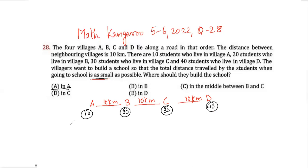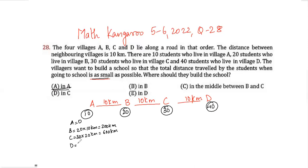Let's start with the options. Suppose the school is built in A. Students in village A travel zero kilometers. 20 students in village B travel 10 kilometers, giving 200 kilometers. 30 students in village C travel 20 kilometers, giving 600 kilometers. 40 students in village D travel 30 kilometers, giving 1200 kilometers. So the total distance traveled if the school is at A is 2000 kilometers.